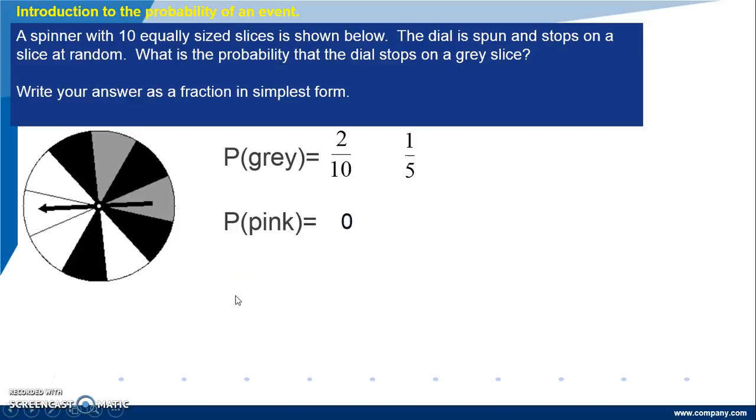What is the probability that when the dial is spun it will land on a grey or a black or a white slice? Well since all of the slices are either grey or black or white, the answer is 10 over 10, which is 1. It definitely will stop on one of those slices.